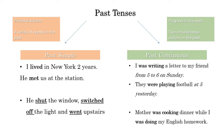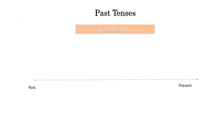An action that takes time in the past — for example, from 5 to 6. So there is a continuous period from 5 to 6, or at 5 yesterday. If I give a specific time in the past, I use the past continuous. But if I just say 'yesterday' with no specific time, I put it in the past simple.